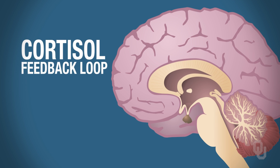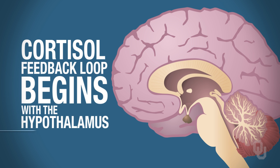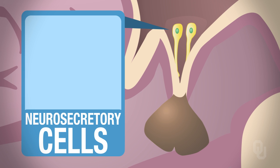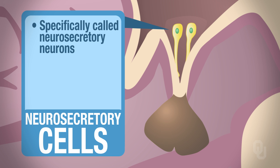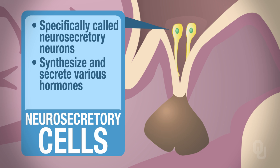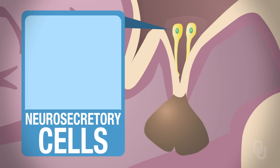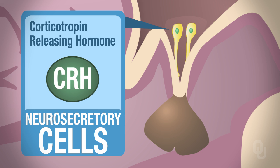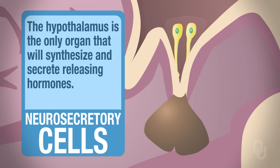To begin the cortisol feedback loop, we will begin with the hypothalamus. The hypothalamus is a region of the brain near the center. Inside of the hypothalamus, we have some cells called neurosecretory cells—or neurosecretory neurons, to be more specific—which will synthesize and secrete various hormones. In this case, the neurosecretory neurons will synthesize and secrete a hormone called corticotropin-releasing hormone, known as CRH. The hypothalamus is the only organ that will synthesize and secrete releasing hormones, so anytime you hear about a releasing hormone, you can automatically assume it was synthesized and secreted by the hypothalamus.